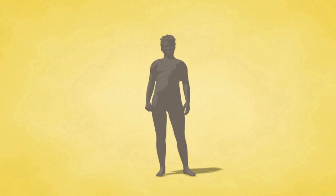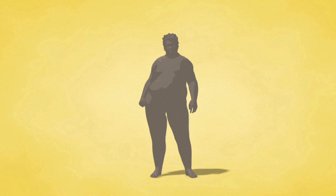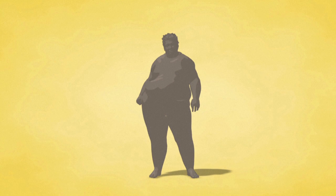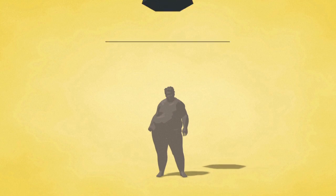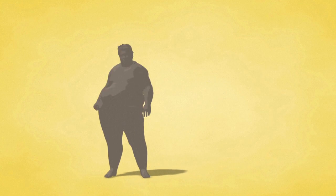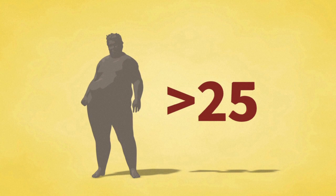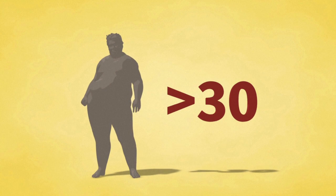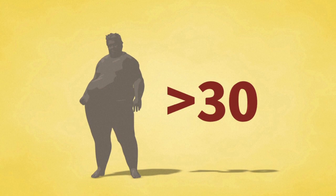Obesity is defined as abnormal or excessive fat accumulation that may impair health. It is measured using the Body Mass Index, which is your weight in kilograms divided by squared height in meters. Anyone with a BMI of 25 or above is classified as overweight. Those with 30 or above are classified as obese.